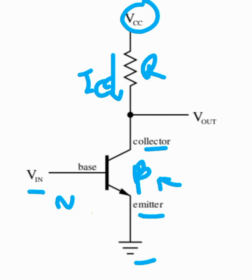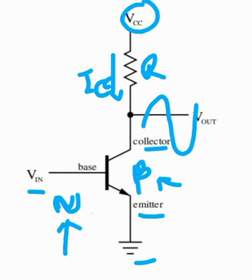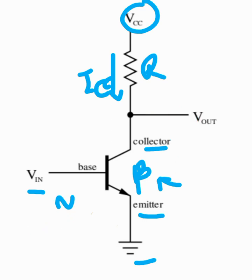Because of this action, the small signal that you apply to the input side of the circuit takes a large form in the output side of the circuit — that's the amplification action. Whether your input signal is current or voltage, you have a large output signal produced at the output side of the circuit, and that's how the transistor operates as an amplifier.